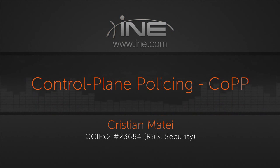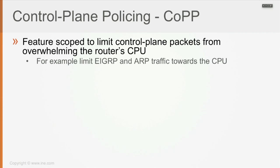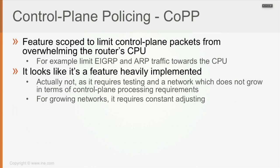Let's speak about what is called Control Plane Policing, or CoPP. This is a feature designed to limit control plane packets from overwhelming the router CPU. For example, you would want to limit the number of EIGRP packets or the size of the EIGRP traffic that is acceptable to be sent towards the CPU.